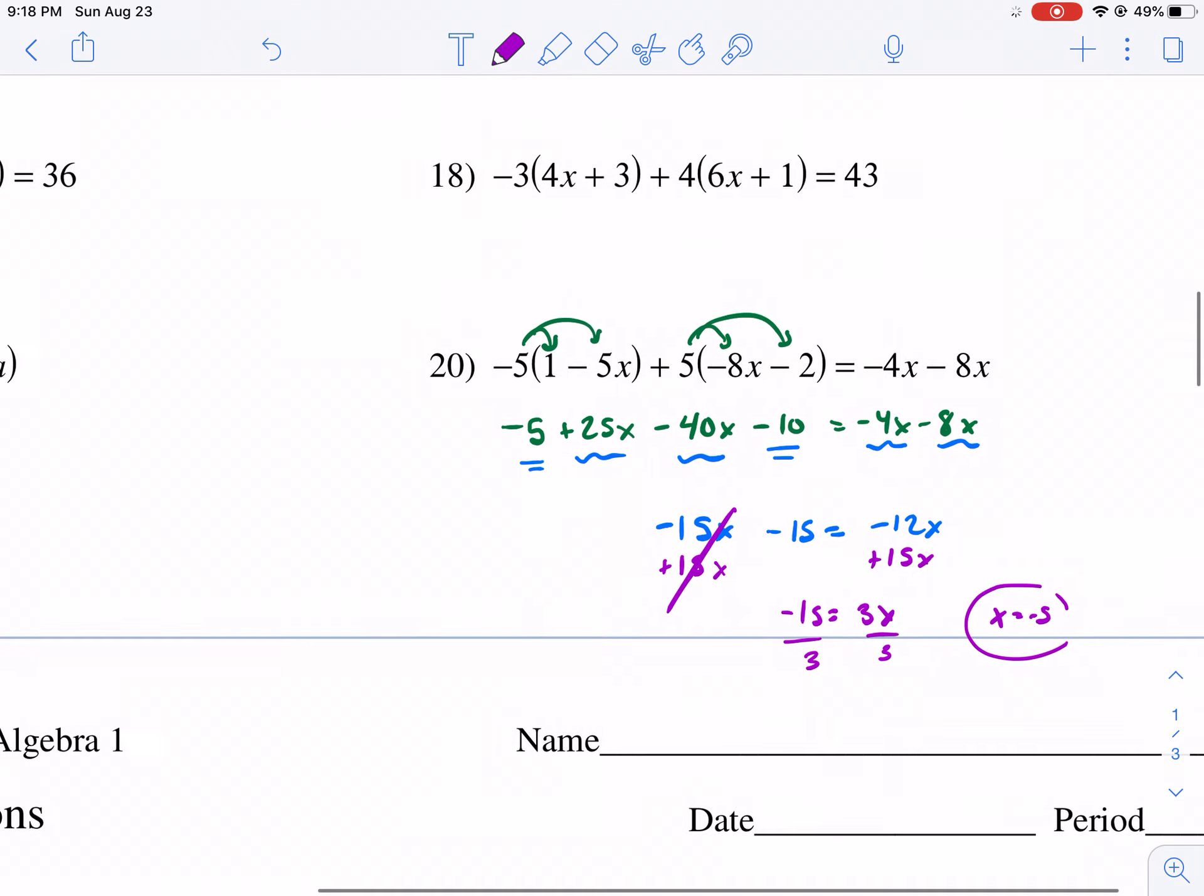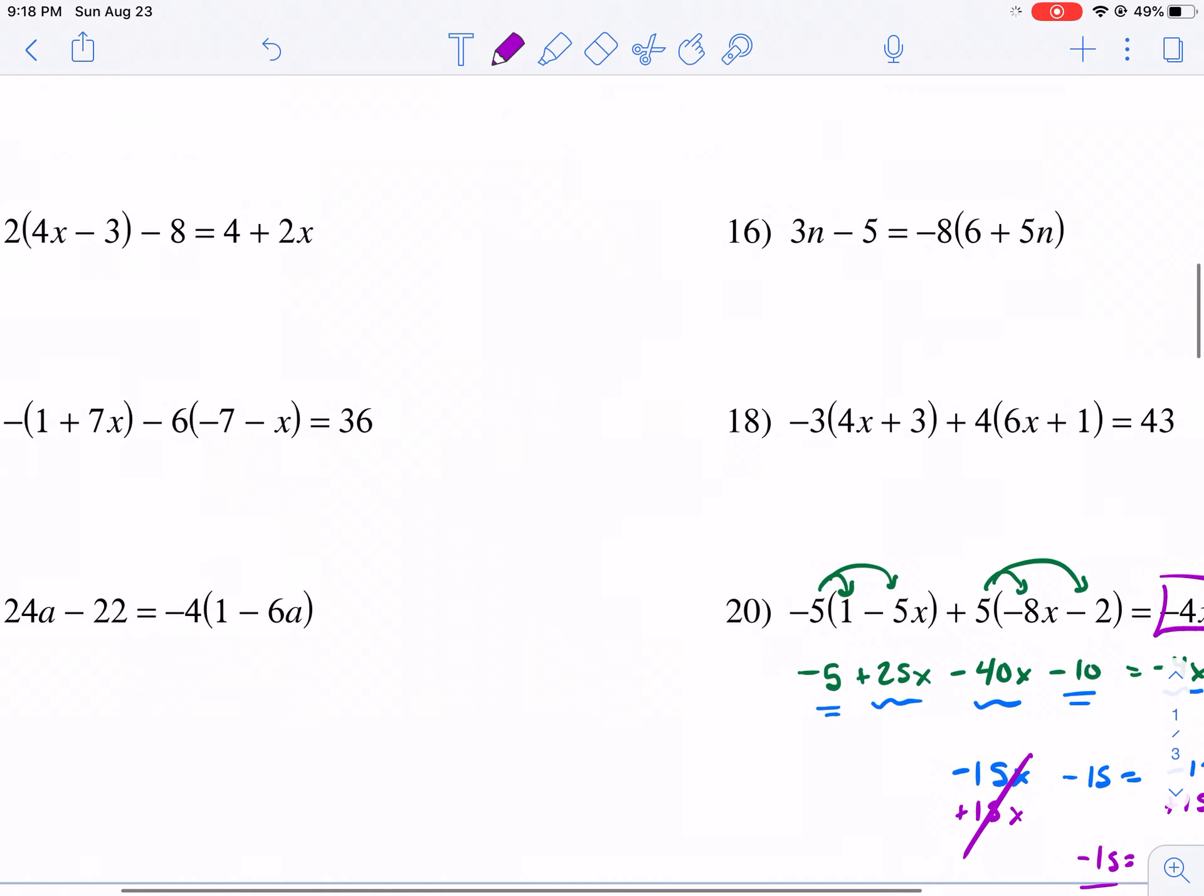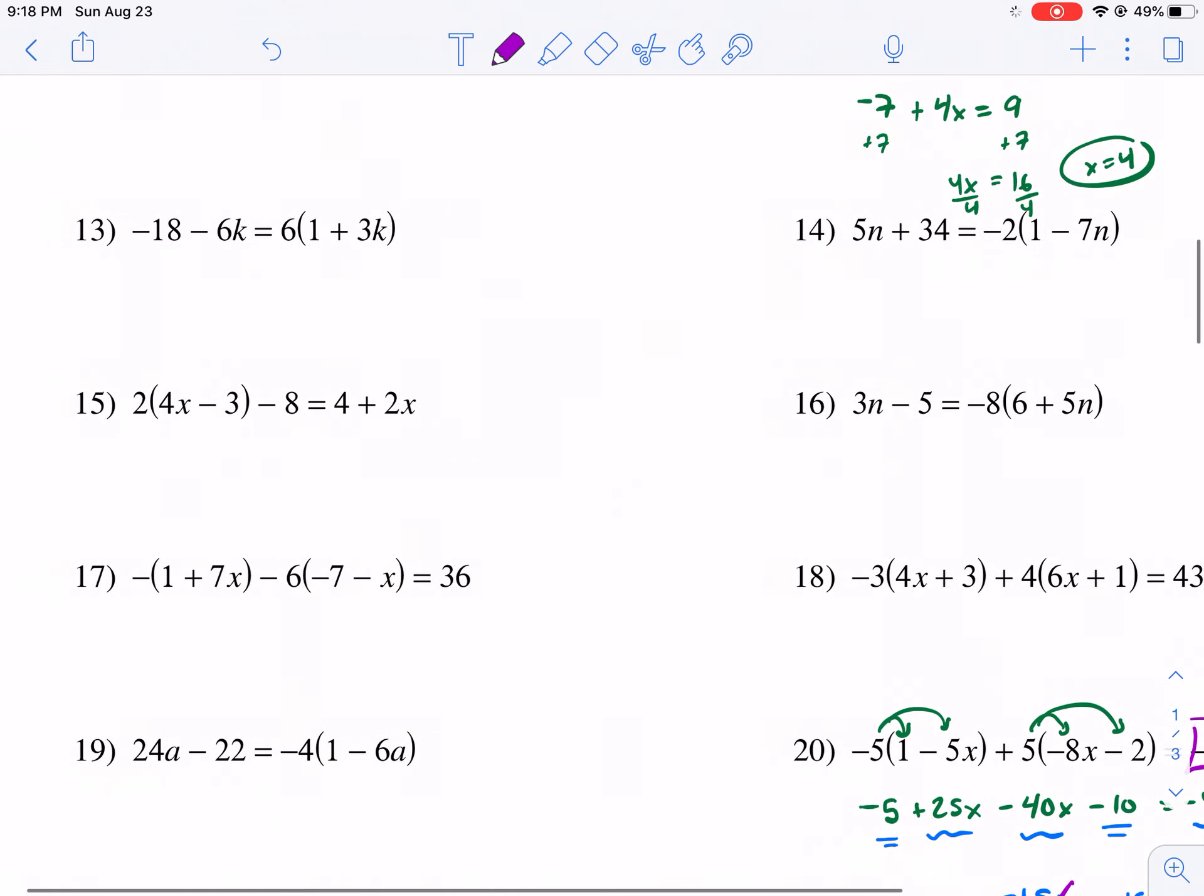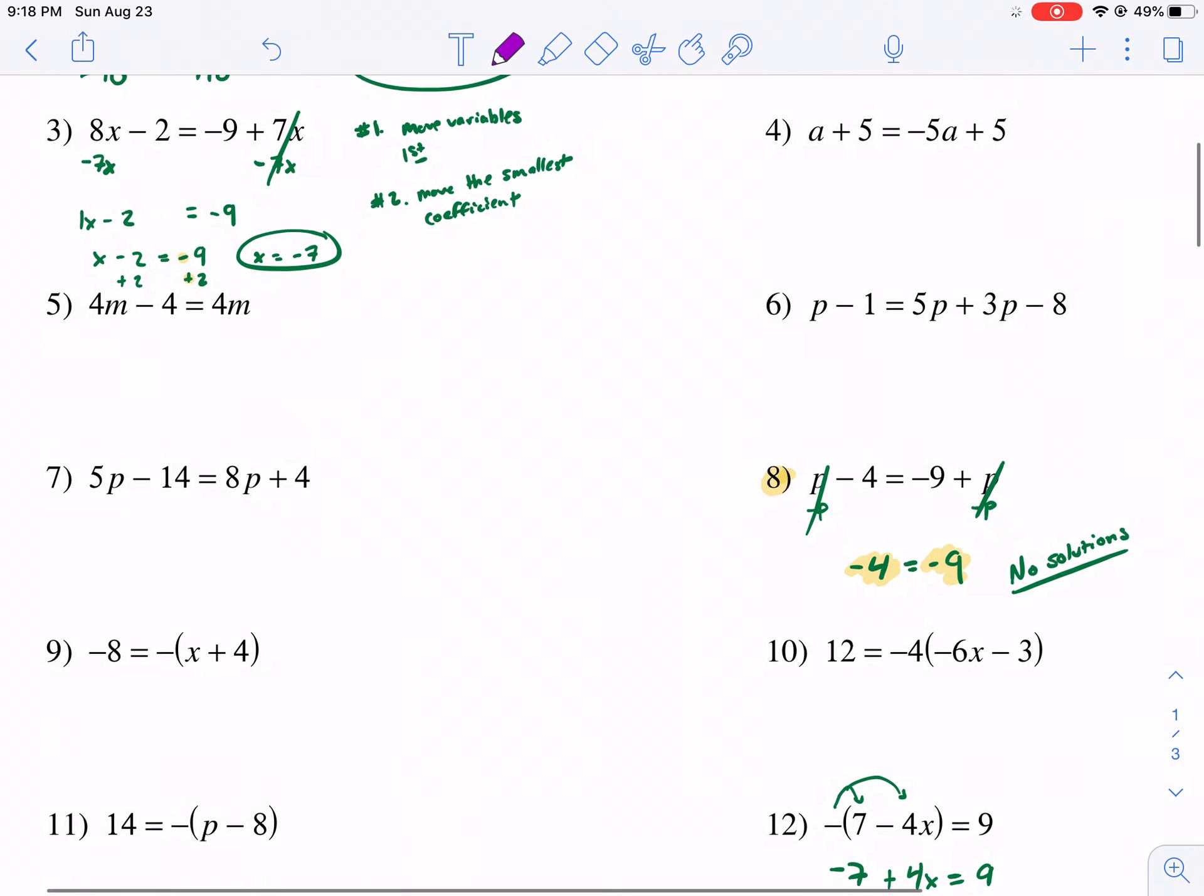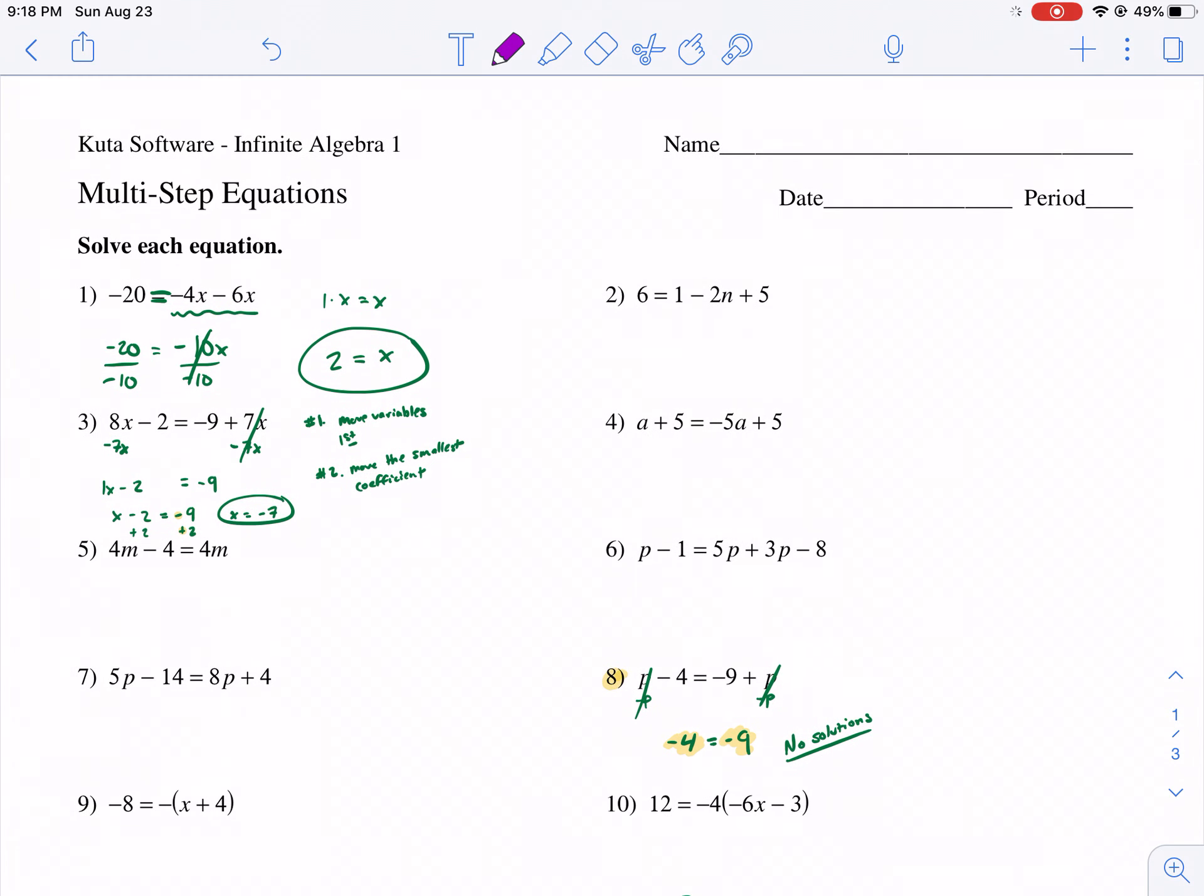So you just got to take it step by step. Remember to distribute anything outside the parentheses. Remember to combine all terms on each side of the equal sign before proceeding. If there's variables on both sides, make sure you move the smaller one over, the one with a smaller coefficient, and then proceed from there doing the opposite operation to get the variables alone. Hope you found this helpful. And thanks for watching.